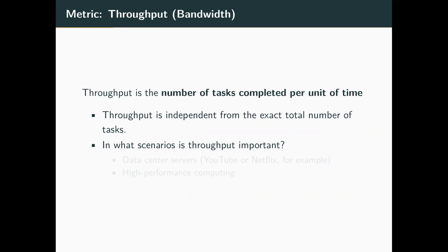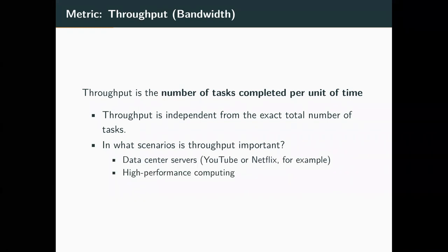The next metric is throughput. Throughput is just the number of tasks completed per unit of time. The task can be whatever — it can be bits of data sent from one place to another, number of page responses, query results given back by Google, whatever. It's independent of the actual exact total number of tasks — it's always over a specific time. It's never just 'we did a thousand tasks' — how long did it take to do those?